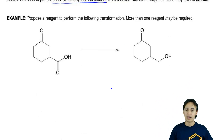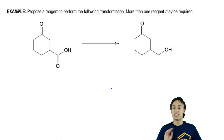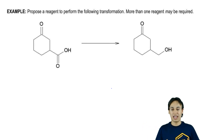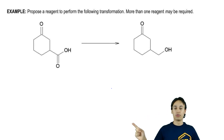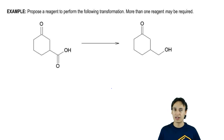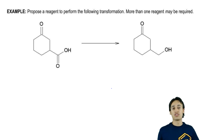Look at this example and devise a synthesis. Look at these two molecules and figure out the best way to convert the first molecule into the second one. This is not a one-step reaction — if you try to do it in one step, you're going to fail. Think about what reactions you could do in what sequence to make this transformation happen, and then I'll show you.